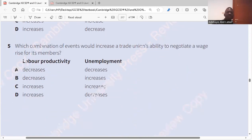Question five. Which combination of events would increase a trade union's ability to negotiate a wage rise for its members? To raise the wage. Labor productivity should what? Decrease. Increase. Conditions for pressuring your employers to pay more. Conditions for wage claims. Yes, it's increasing.